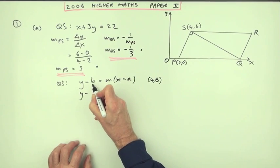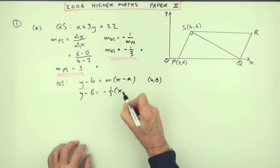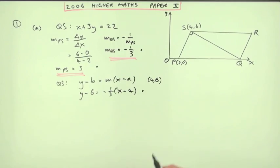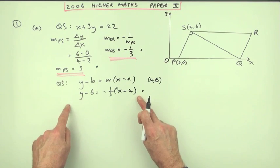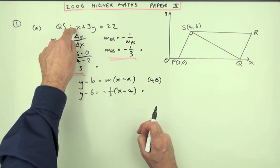I've got the gradient negative 1 third and the point 4,6. So y minus the y coordinate, 6, is negative 1 third of x minus the x coordinate, which is 4. That's your third mark out of the 4. Now, in this case, you have to tidy this up.